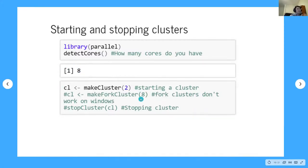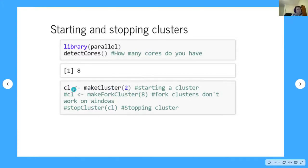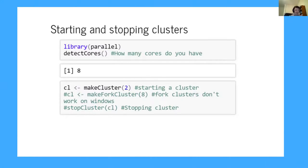To make workers, I use the makeCluster function from parallel. I'm going to make two for this presentation because if I had eight, the output becomes too long to fit on one slide. I save it into the object CL. If you want to make a fork cluster, you'd use makeForkCluster, but these don't work on Windows. And when you're done, you call stopCluster(CL) — it's important to tidy up the clusters so they're not just running in the wild when you're not using them.